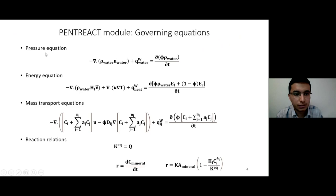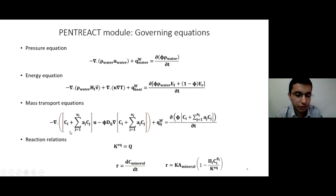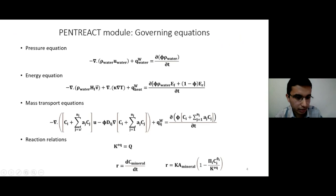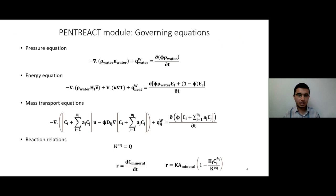After that, we have the energy conservation equation. In the case of isothermal systems, this energy conservation equation is not used. For mass transport equations, we have the mass conservation equations of primary species and their corresponding secondary species. For modeling chemical reactions, there are two types of reactions in reactive transport modeling: equilibrium reactions and kinetic reactions. This module is capable of distinguishing these reactions from each other.